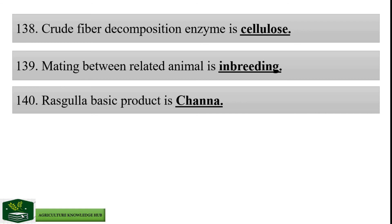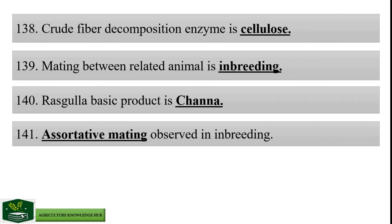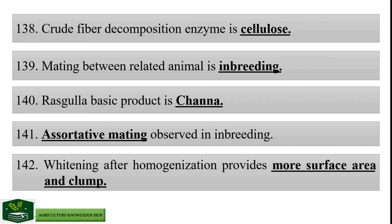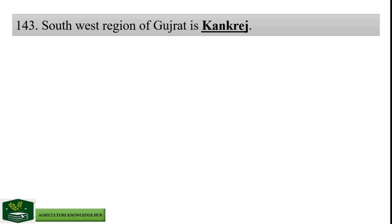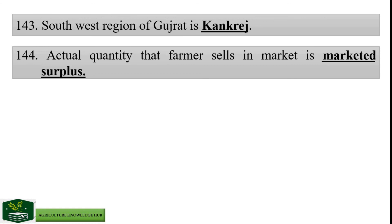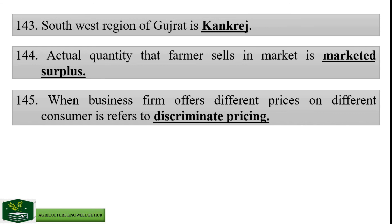Rasgulla's basic product is chhana. Assortative mating is observed in inbreeding. Widening after homogenization provides more surface area. Actual quantity that farmer sells in market is marketed surplus. When a business firm offers different prices to different consumers, it is referred to as discriminatory pricing.